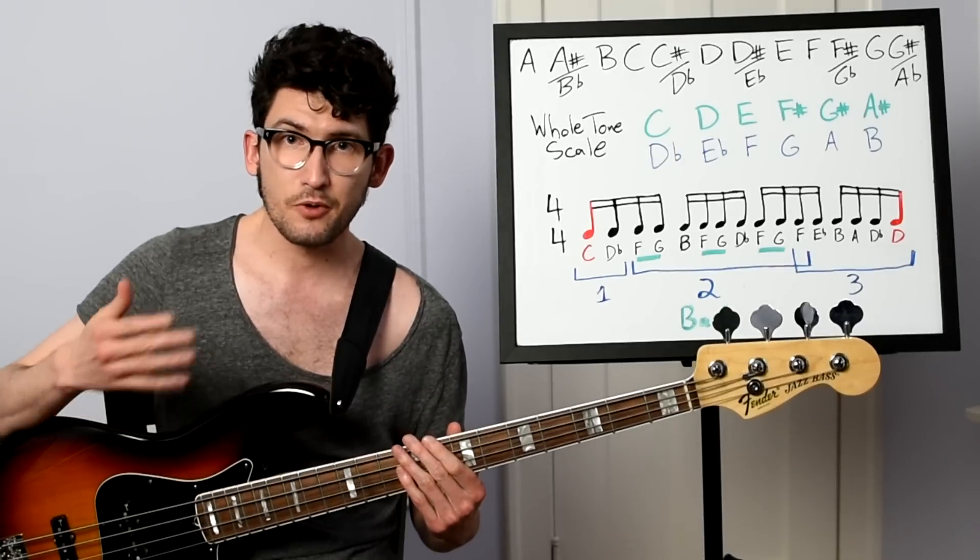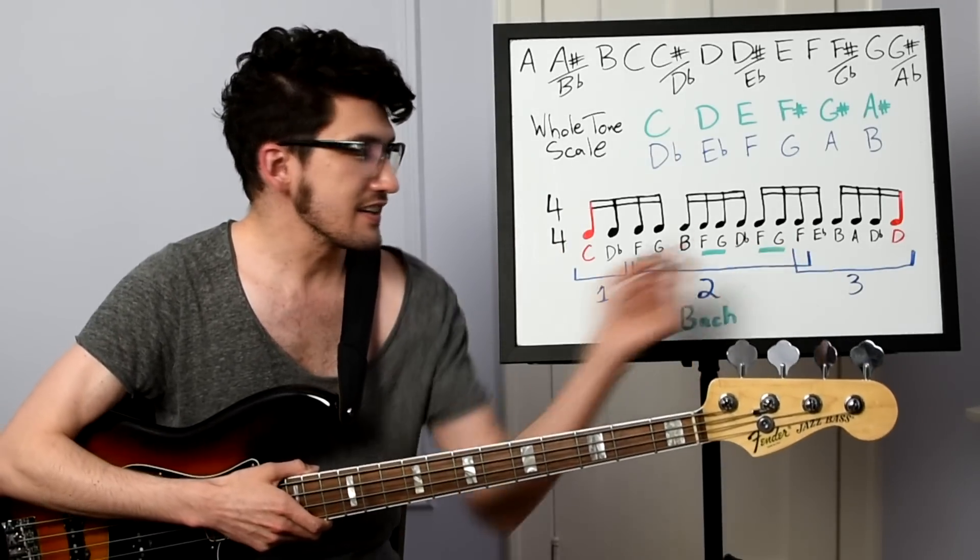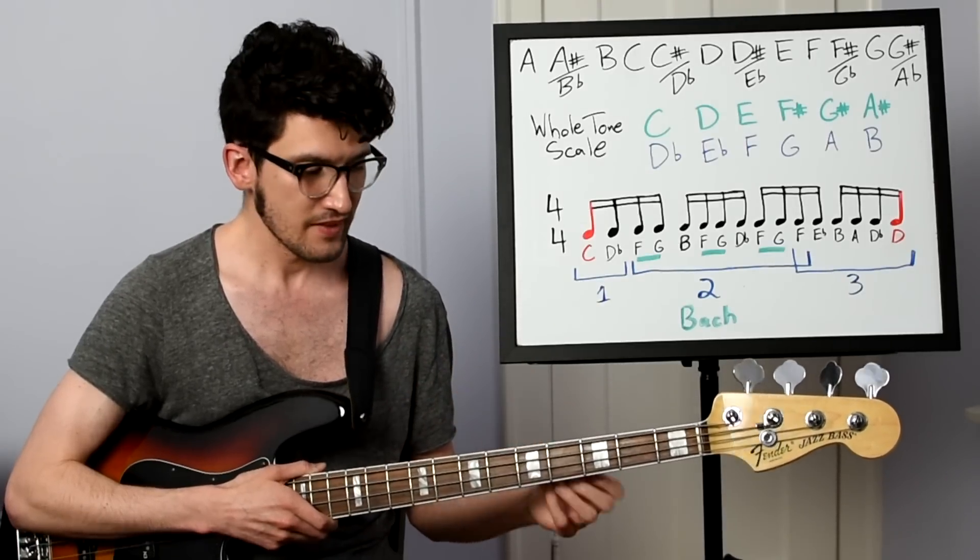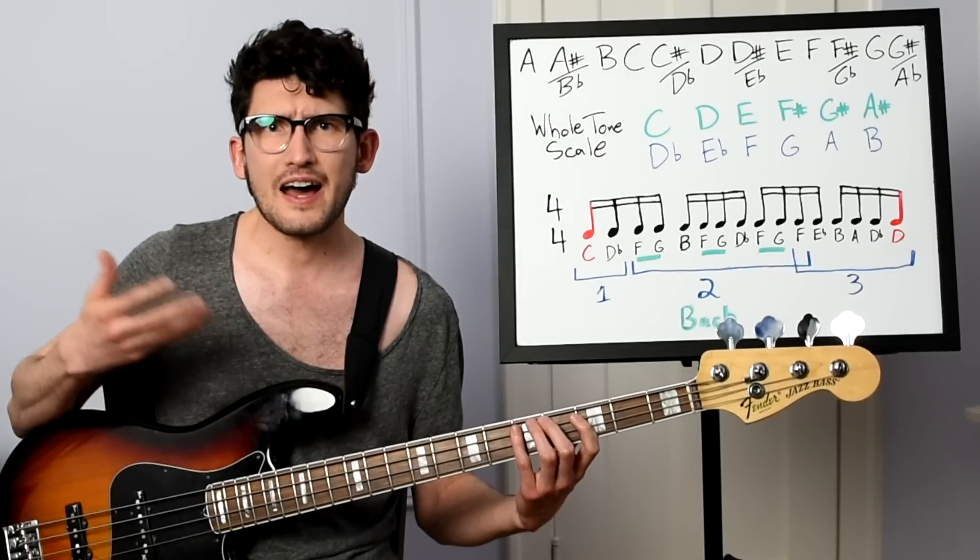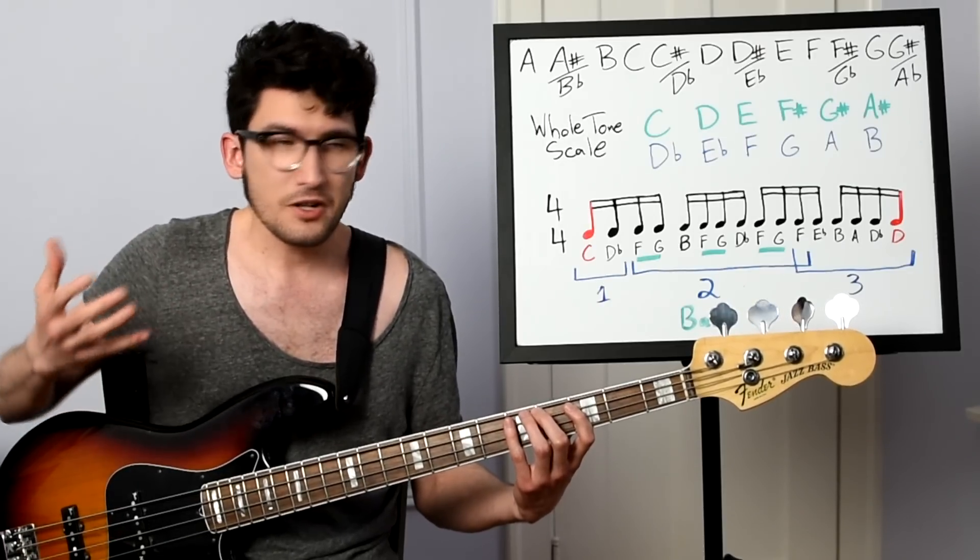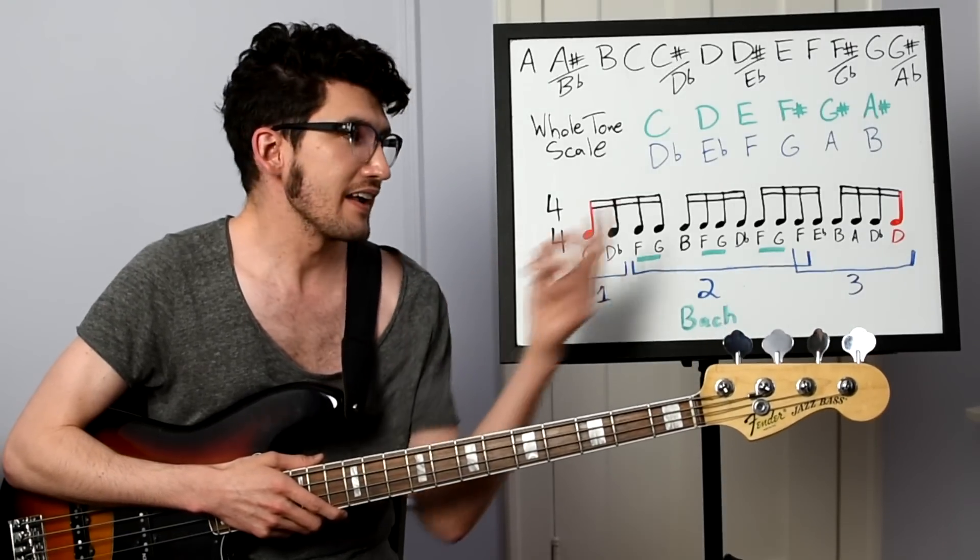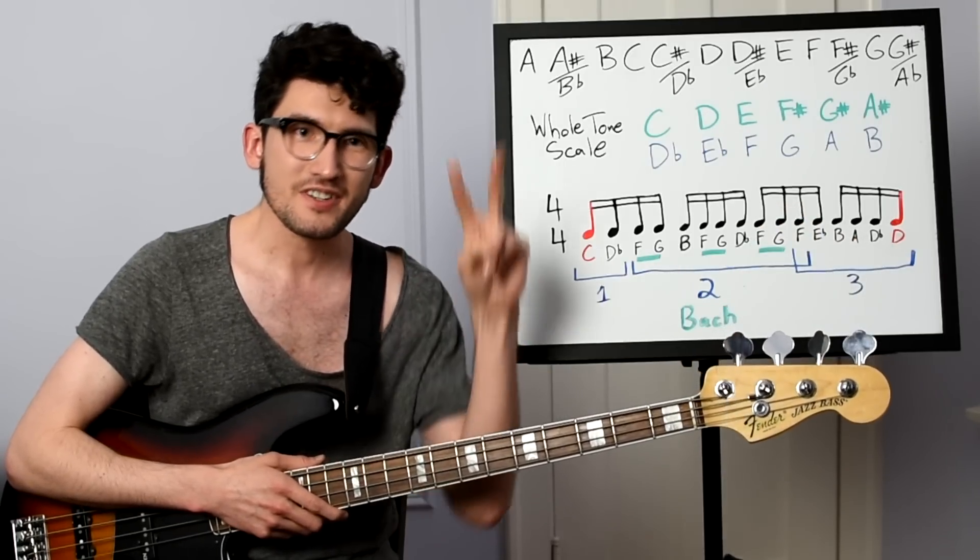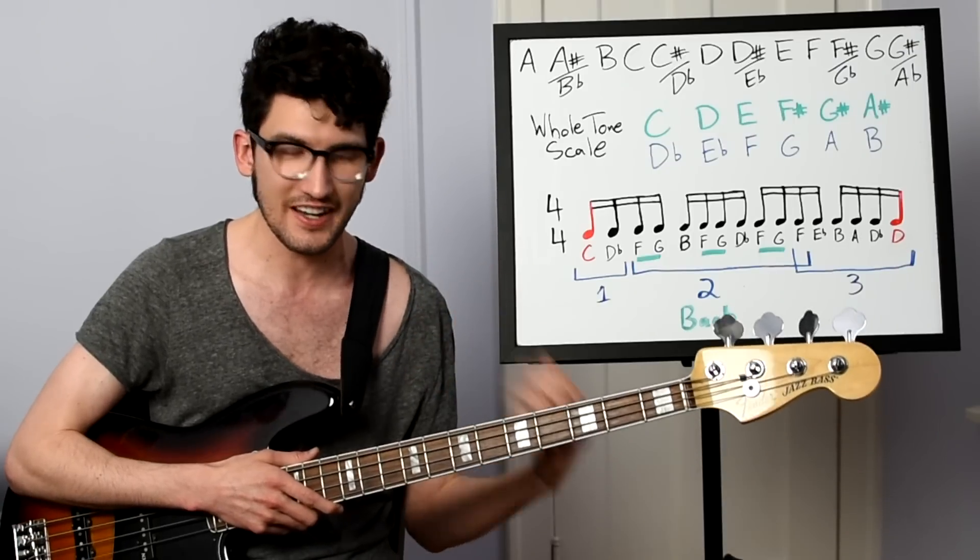Now the last thing I'd like to mention before closing this out is, again, the C and D natural that we have that aren't in the whole tone scale. Now the reason I use these is because, as I stated before, the whole tone scale doesn't really have a tonic note. It's kind of floaty. So using the C, which is a half step below D-flat, and the D, which is a half step above it, I'm hoping to tonicize the D-flat to make it seem as if it's in a scale.